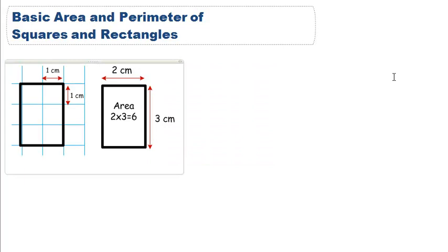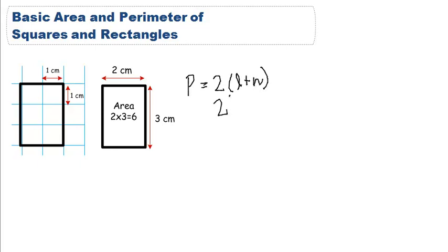Here we have a rectangle whose length is 2 centimeters and width is 3 centimeters. To find our perimeter we could either add 2 plus 2 plus 3 plus 3, or we could do perimeter equals 2 times the length plus the width. In this case it would be 2 times 2 plus 3.